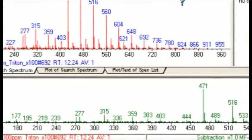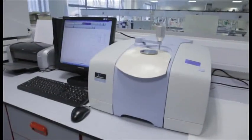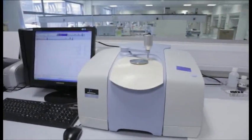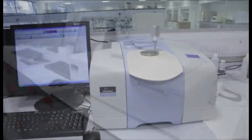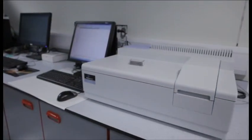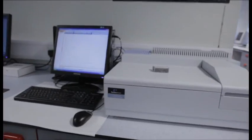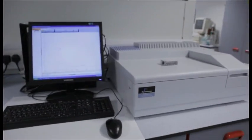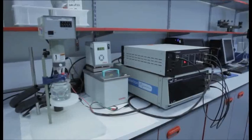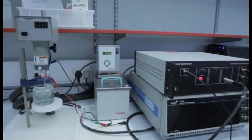FTIR identifies the functional groups in a molecule and can be used for both liquid and solid samples. UV spectroscopy identifies chemicals that absorb strongly in this part of the light spectrum. The potentiostat is used to measure the kinetics of electrochemical reactions.